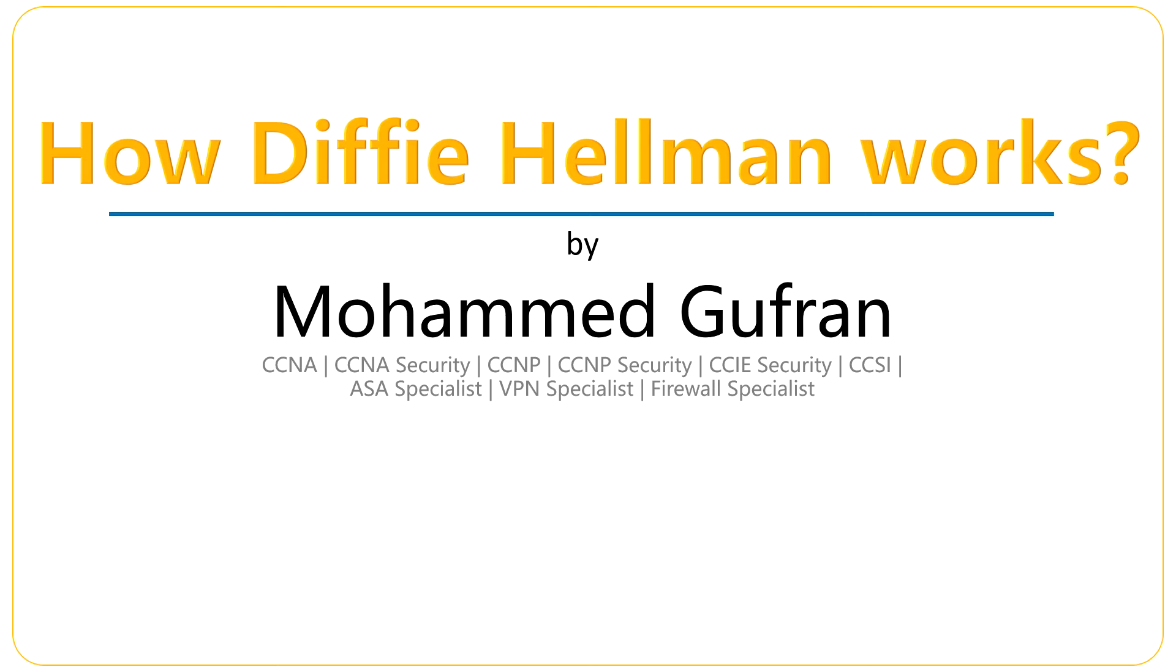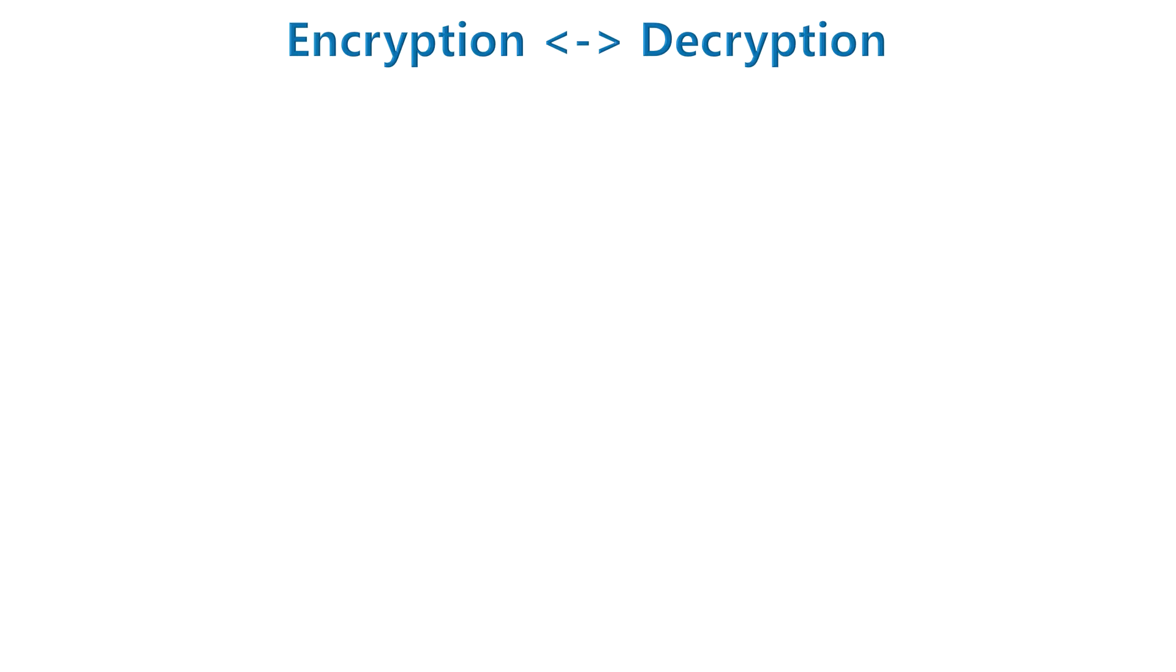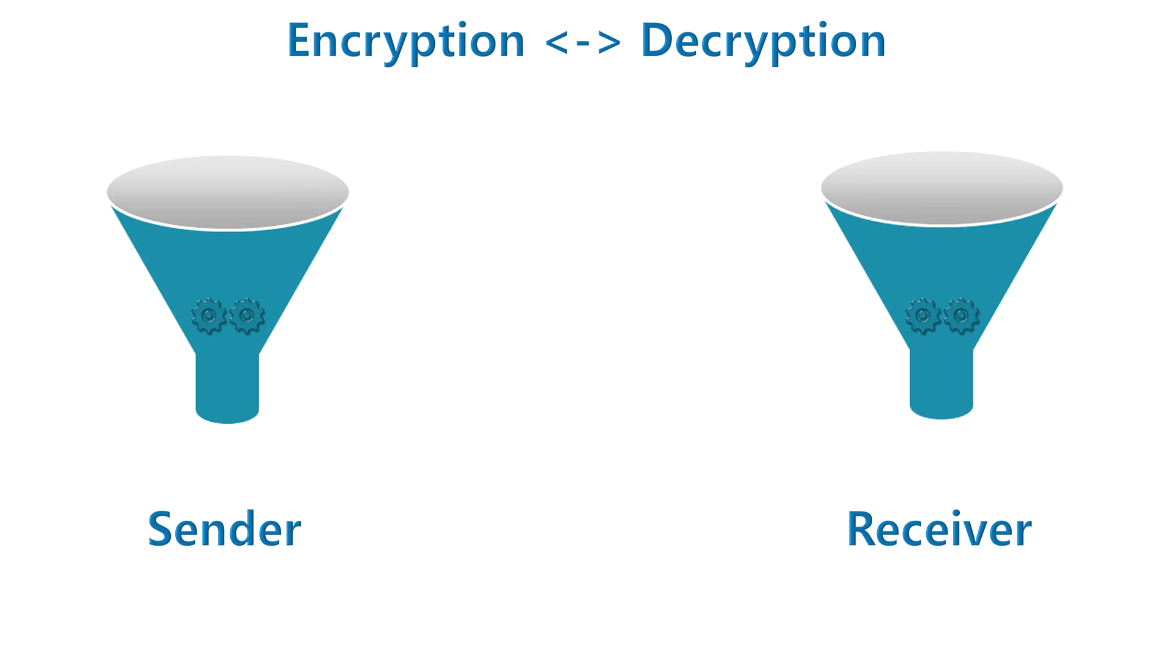In VPN, one device encrypts the data and other end device decrypts. For this purpose, both ends must have a powerful engine and that engine is encryption decryption engine. Let's say here are those engines for sender and receiver. There are two main parts of it to make it function and those are its algorithm and encryption key. Now let's see how the traffic is encrypted and sent to the peer.